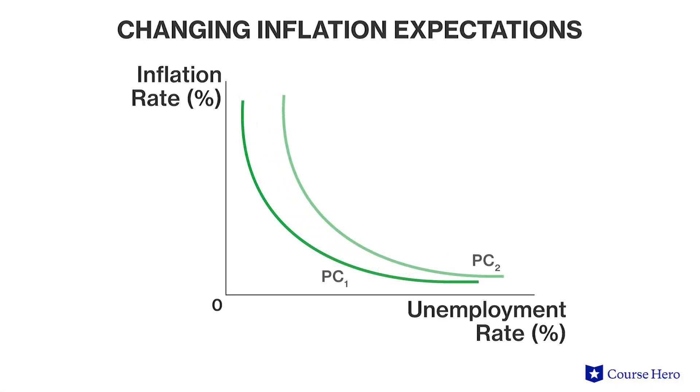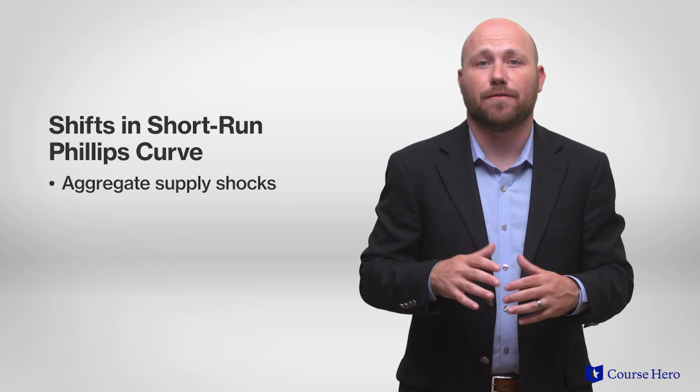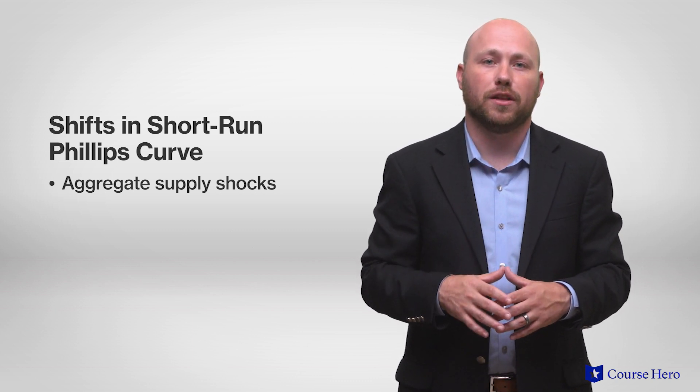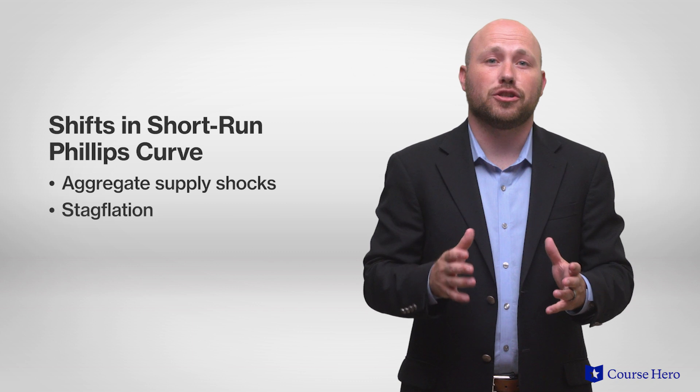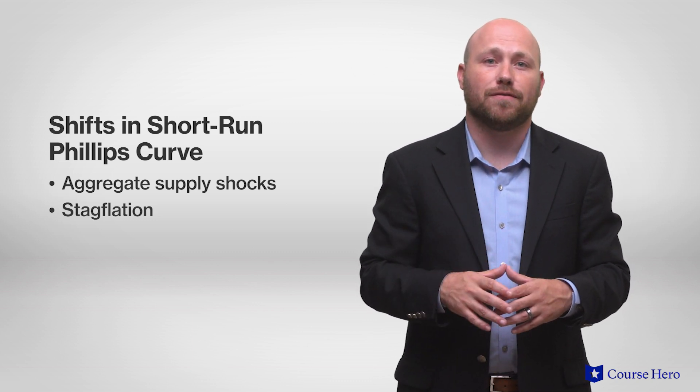In the short run, changes in the level of unemployment are inversely related to the level of price inflation, as reflected by the short-run Phillips curve. Changes in expectations about inflation will shift the short-run Phillips curve — workers expect higher inflation, so they demand higher wages, which firms pass on to consumers in the form of higher prices. Aggregate supply shocks that result in changes in expectations about inflation also shift the short-run Phillips curve, and stagflation will shift it to the right because people expect inflation in the future.